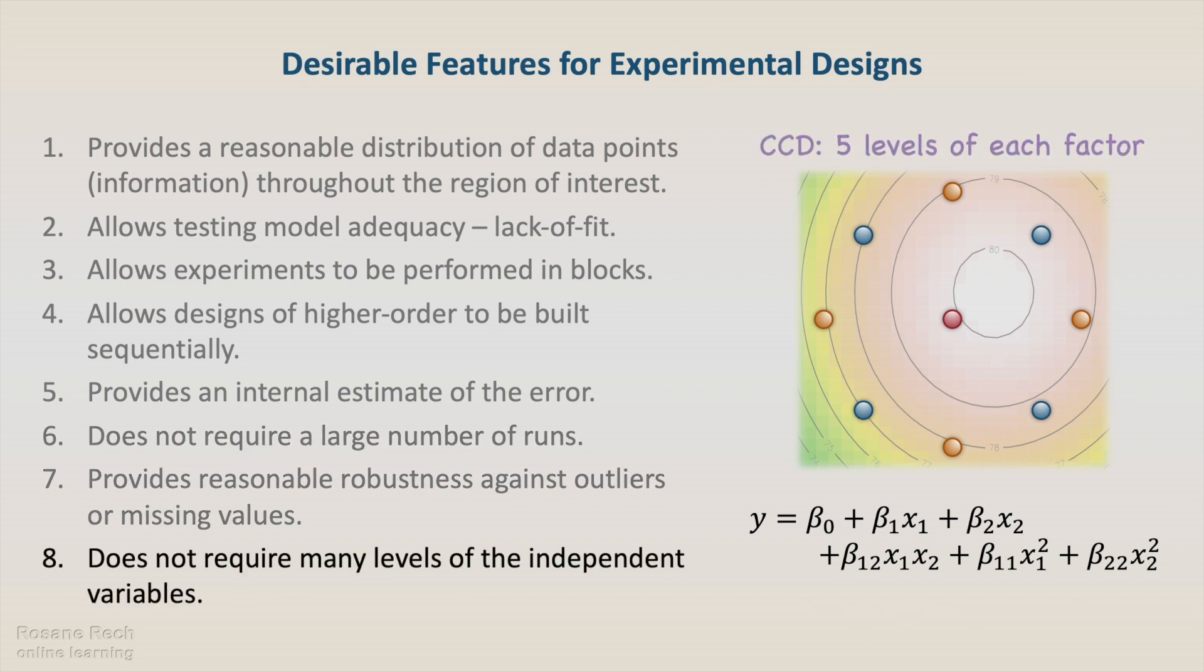And finally, it is desirable that experimental design does not require many levels of the independent variables. For a second-order model, the design needs at least three levels of each independent variable. The most usual designs have three to five levels of each design factor.